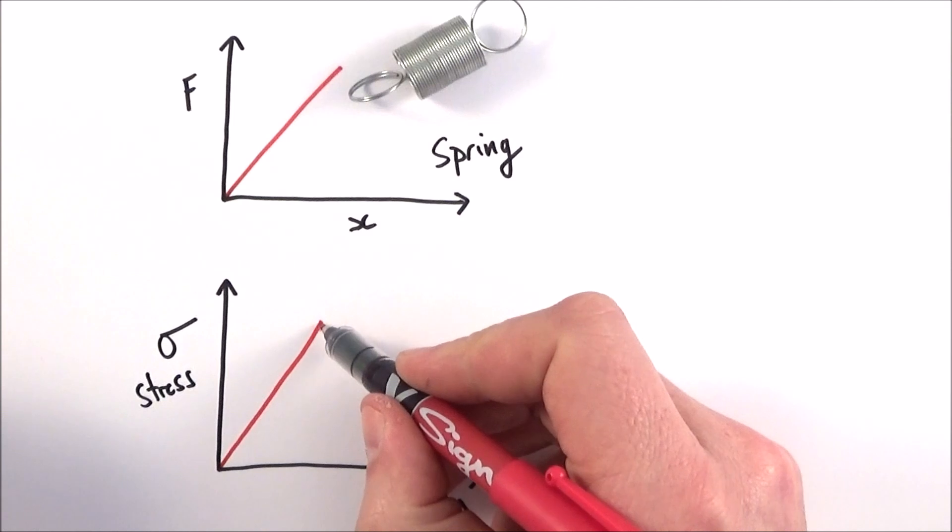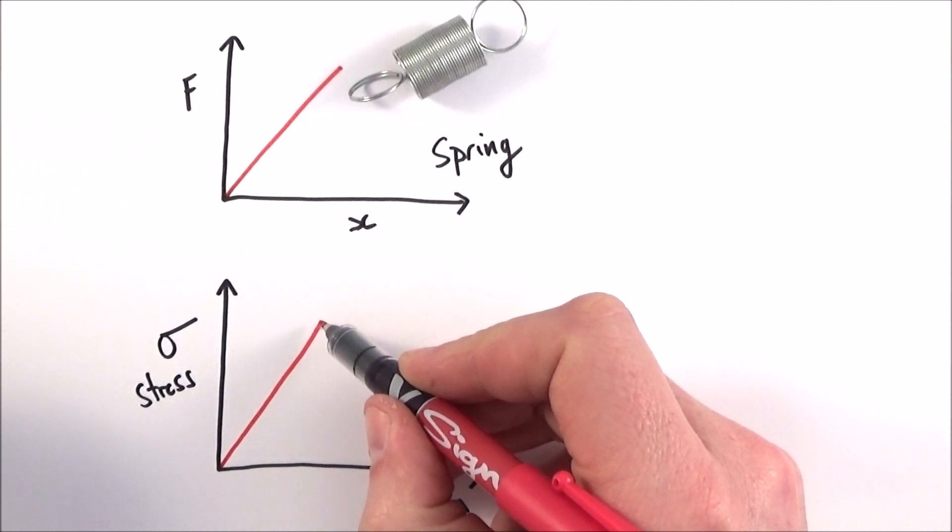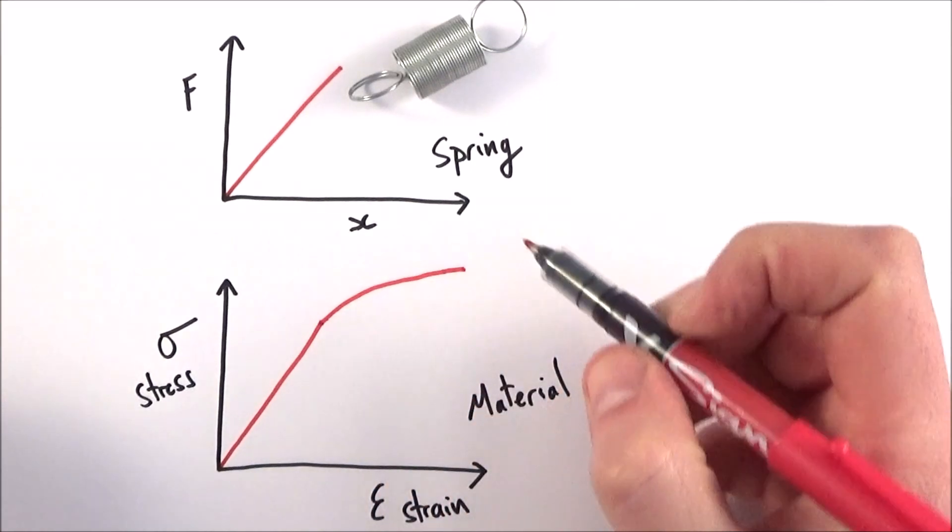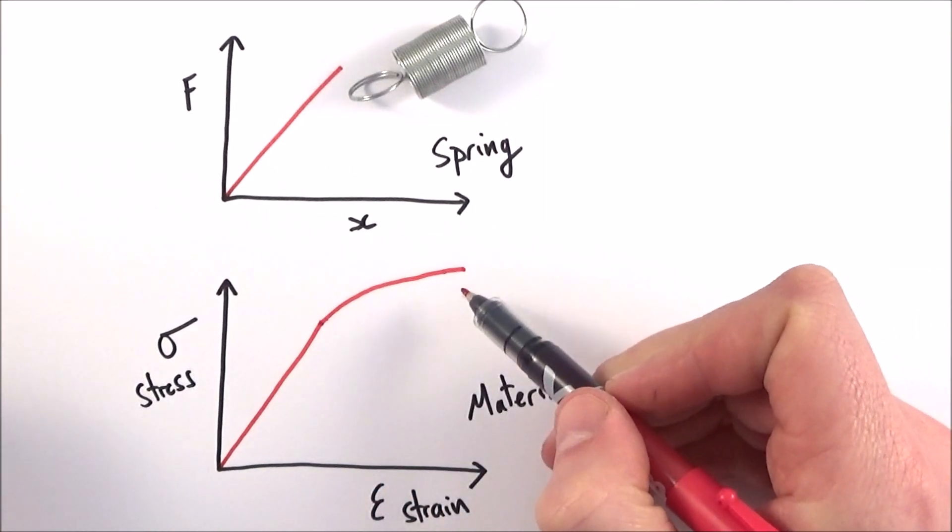Now we get to a point where suddenly it no longer behaves elastically, it then behaves plastically, and what we get is something a bit like this up to a certain point at which it breaks.